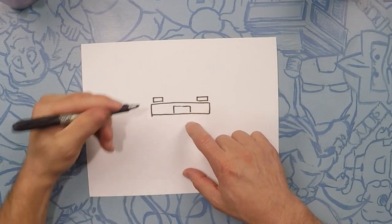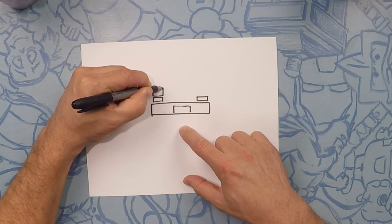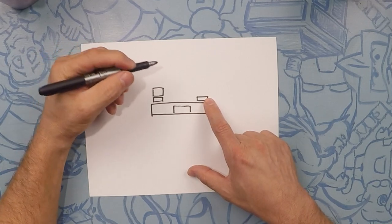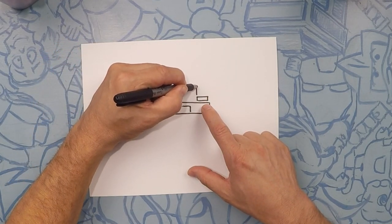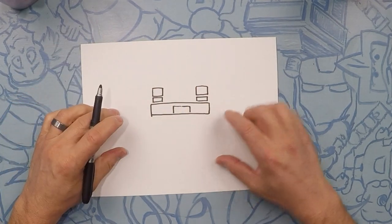Now right above that we're gonna do two squares, one on each side. These are the headlights. So a square like that. A square like this. There you go. Good job.